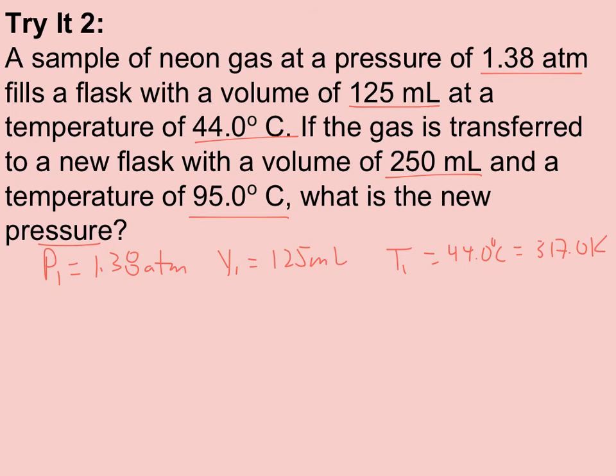And again, when you're doing it mathematically, it doesn't matter if you hold on to that zero, it just helps you keep track of your sig figs. So a new flask with the volume V2 is going to be 250 milliliters. T2 is going to be 95 degrees or 368 Kelvin. And P2 is what I'm being asked to find.